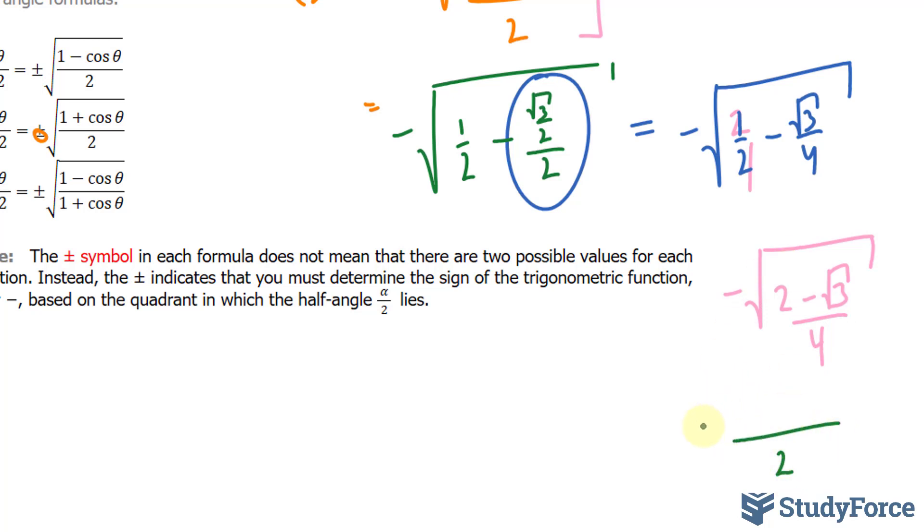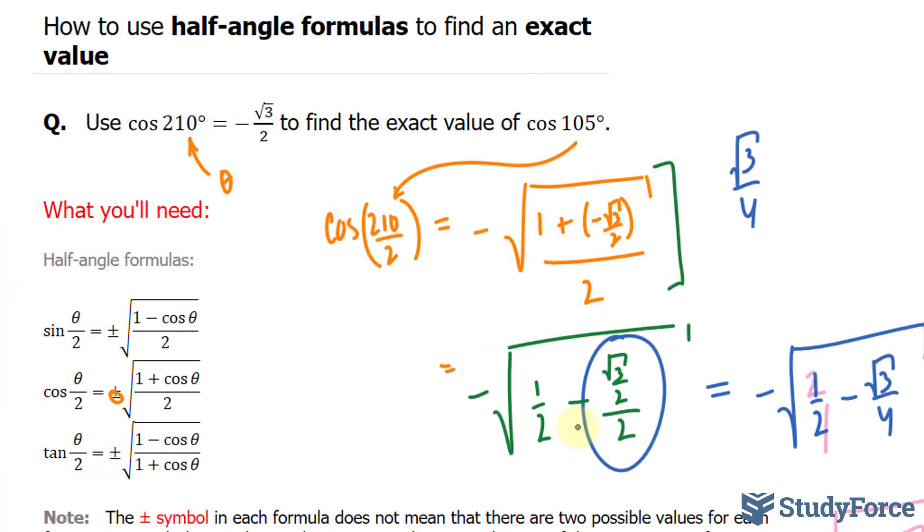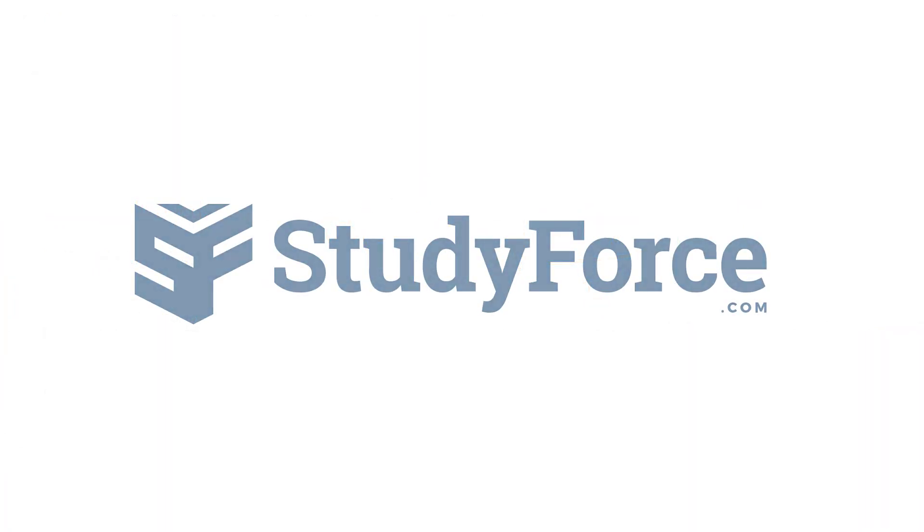And the top part remains as negative square root of 2 minus the square root of 3. What you see in green here is exactly the same as what you see in orange. Although the only difference is that this is not reduced whereas the other one is. And that's just one way to use half angle formulas to find exact values.